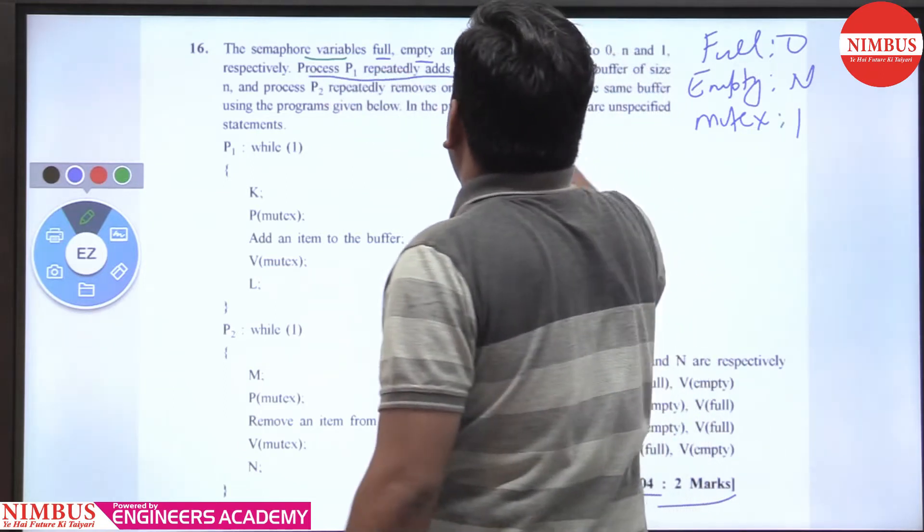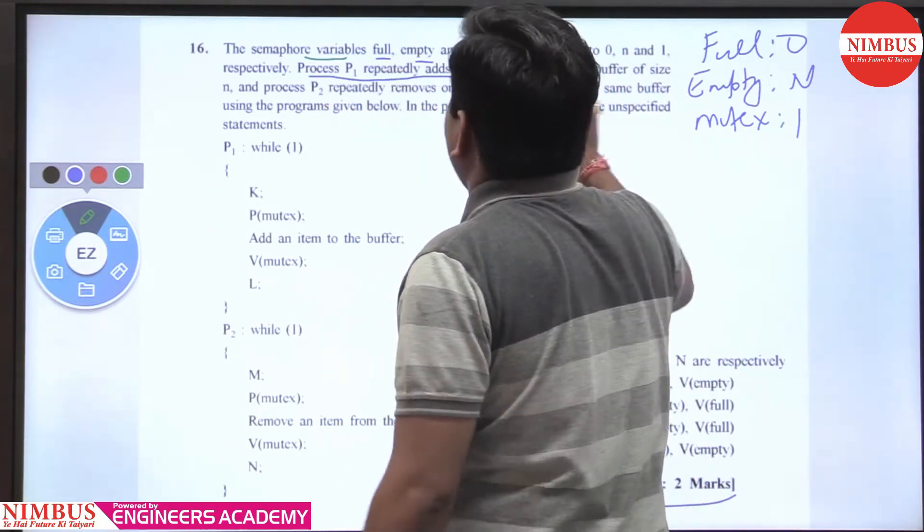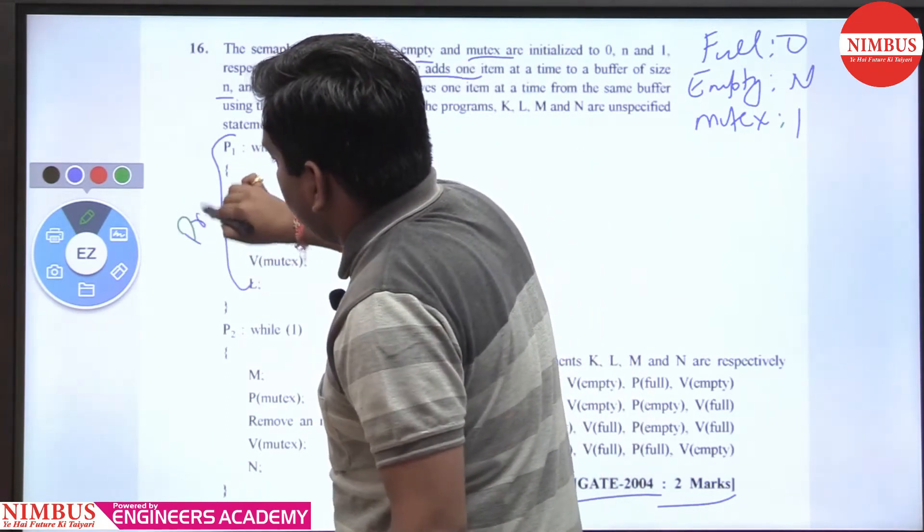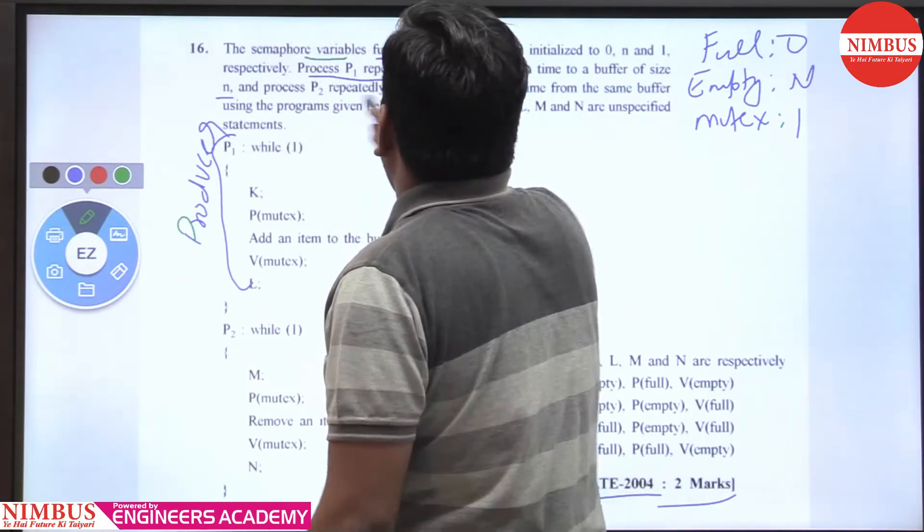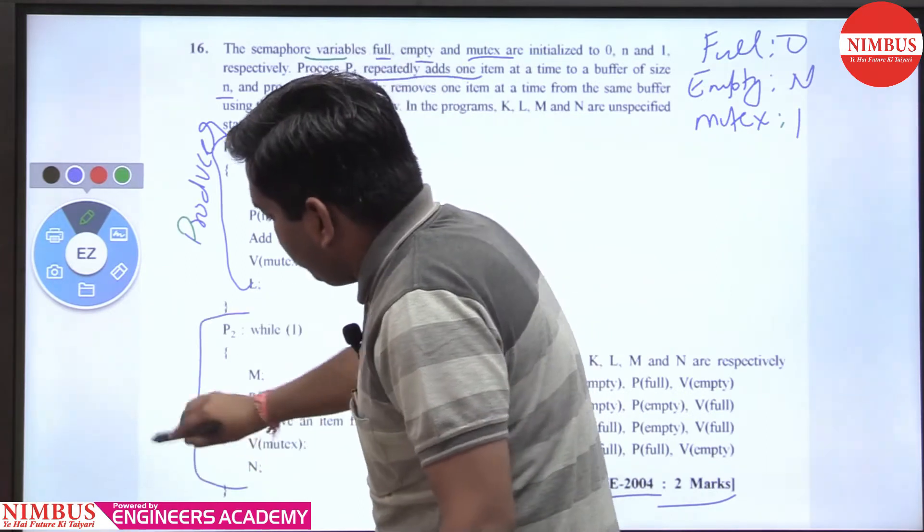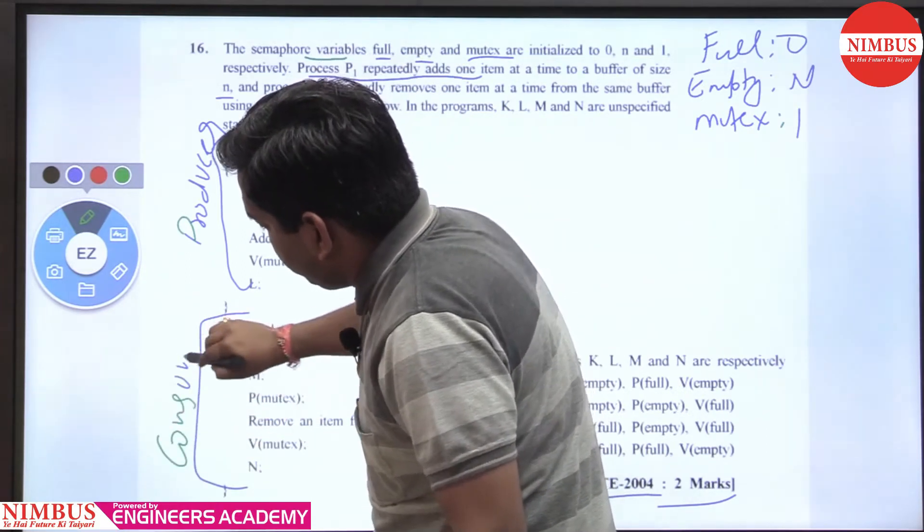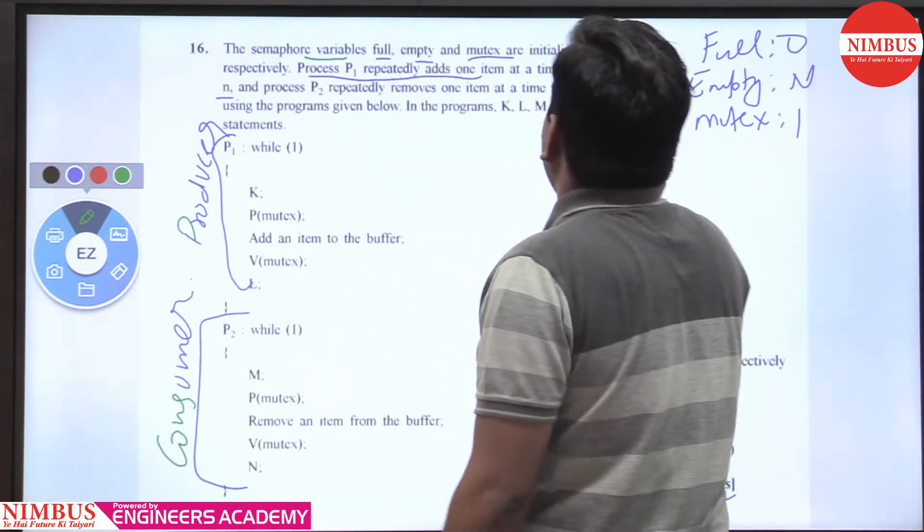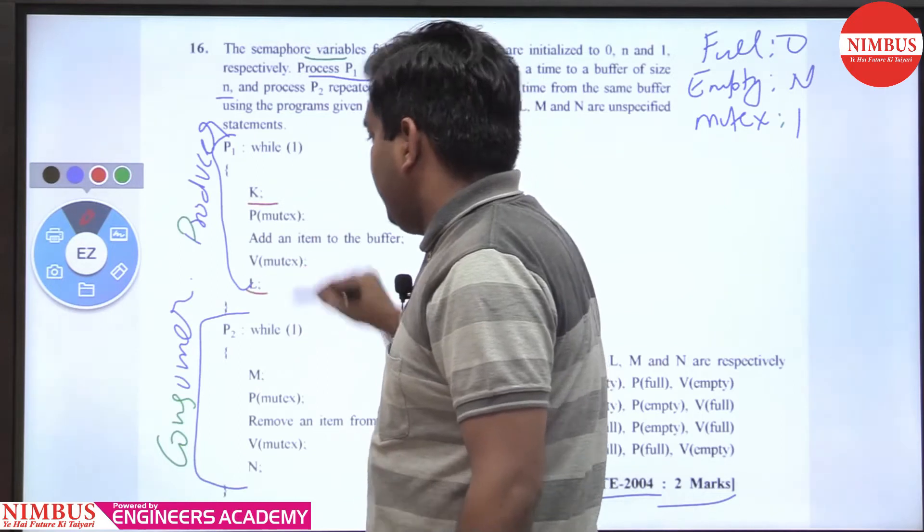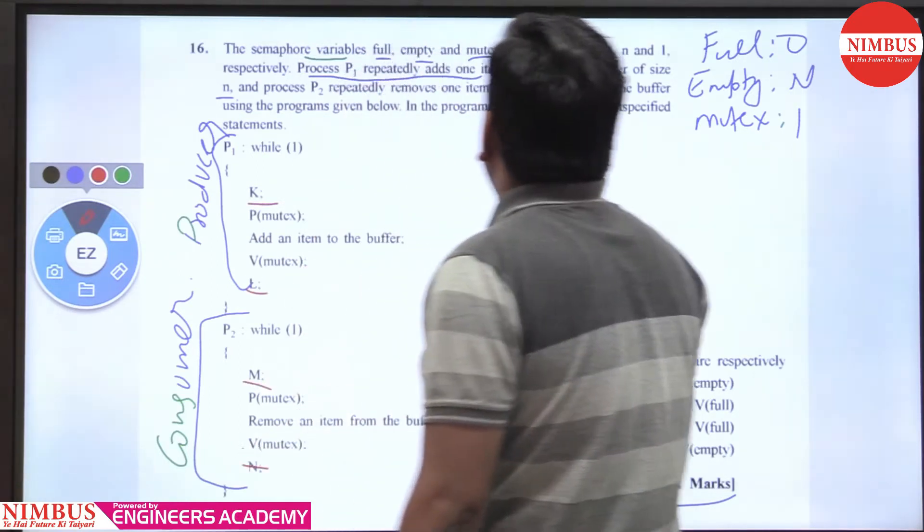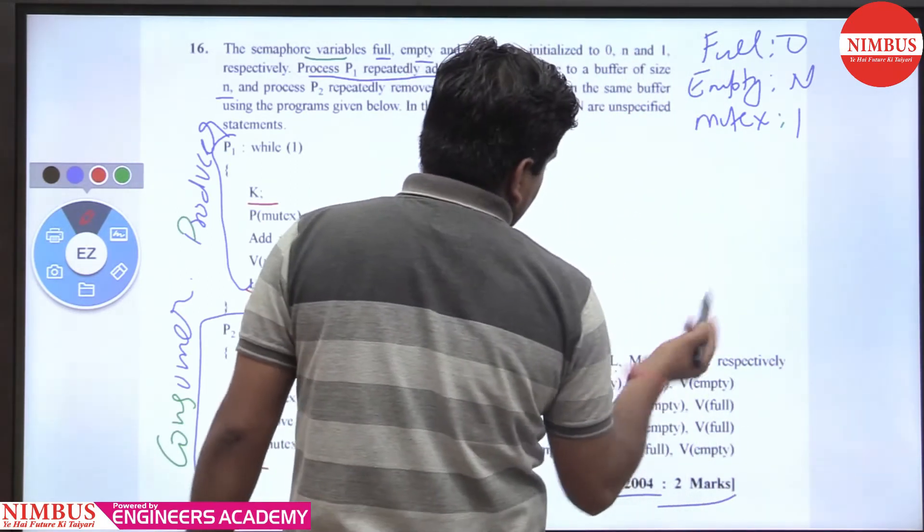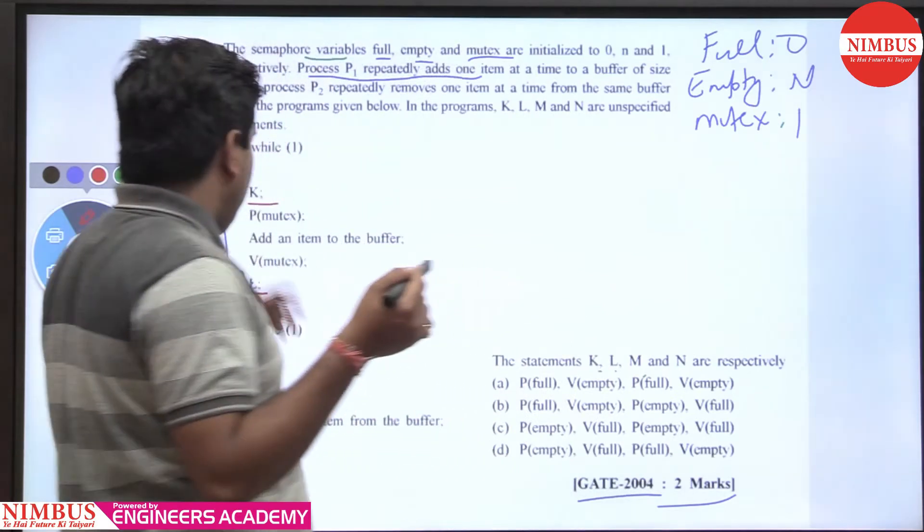Process P1 repeatedly adds items to a buffer of size n - this is the producer code. P2 repeatedly removes one item at a time from the same buffer - this is the consumer. K, L, M, and N are unspecified statements, and the question asks what should appear at K, L, M, and N respectively.